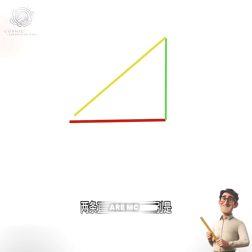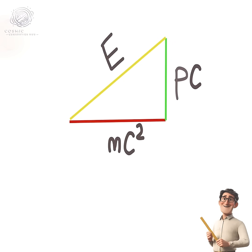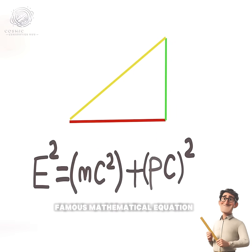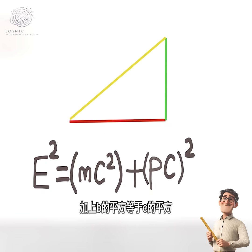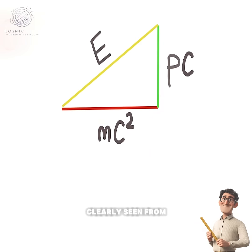The lengths of the two legs are mc² and pc. Then use the most famous mathematical equation in the world, the Pythagorean theorem. This way we arrive at this equation.